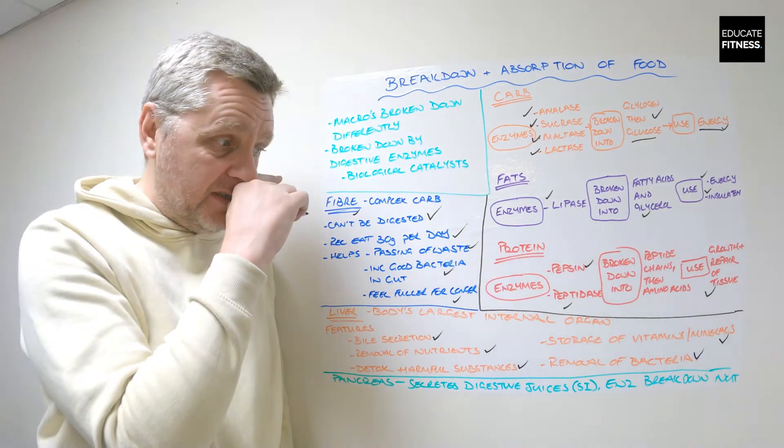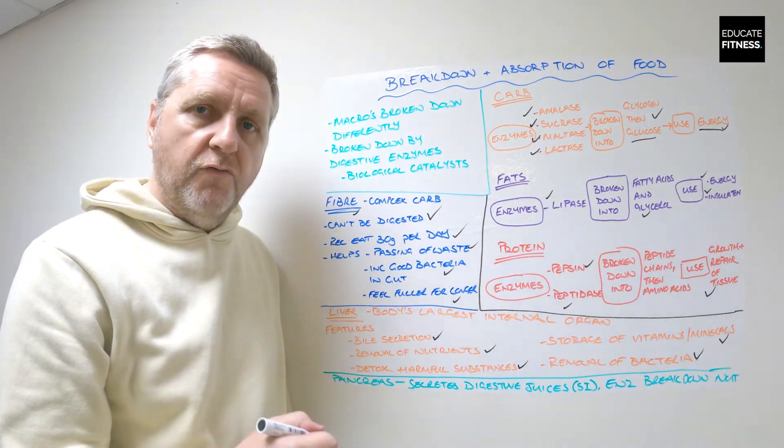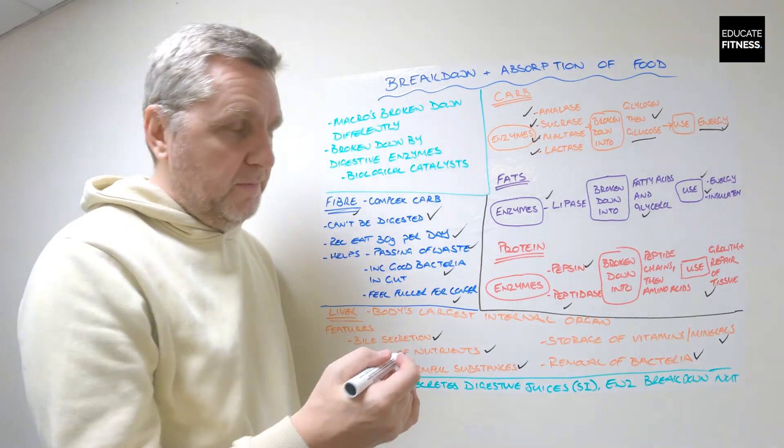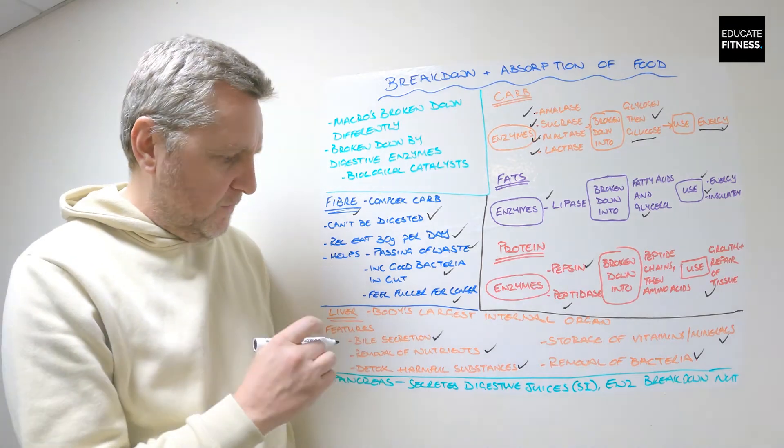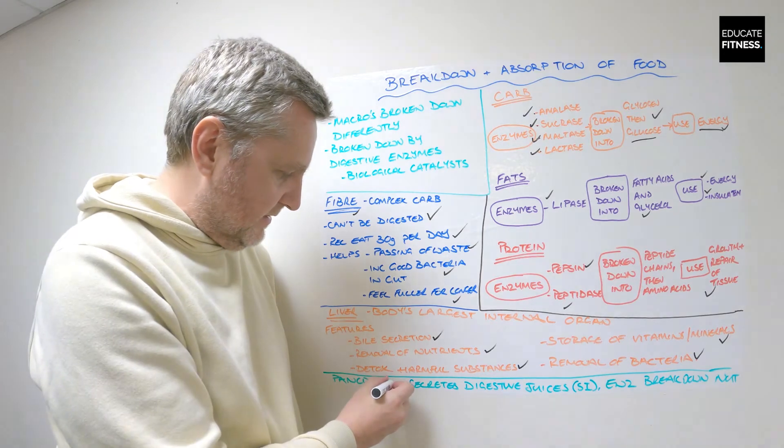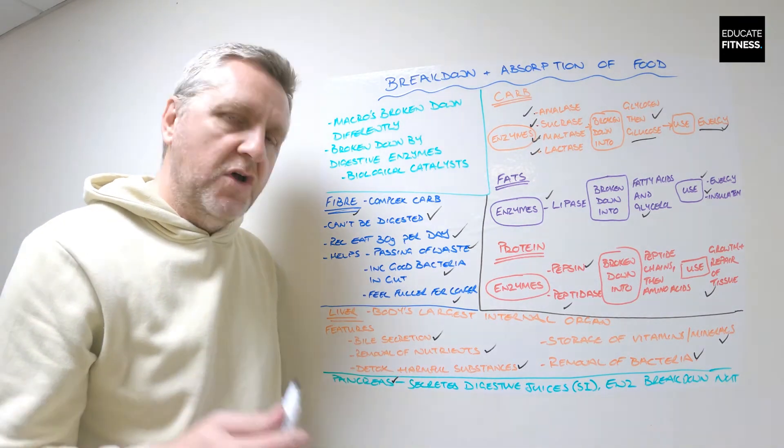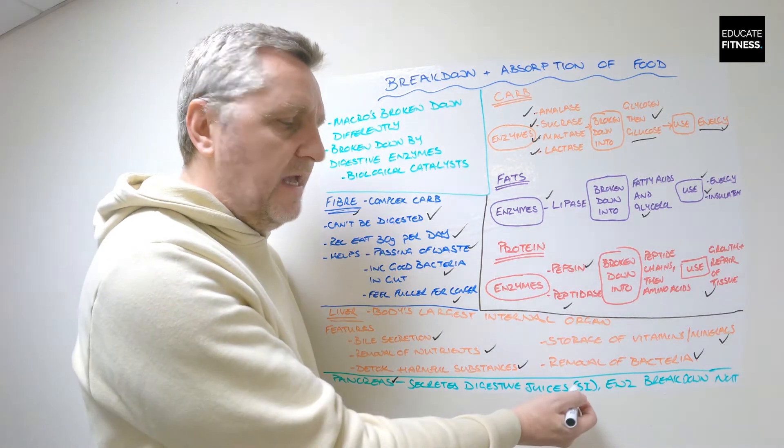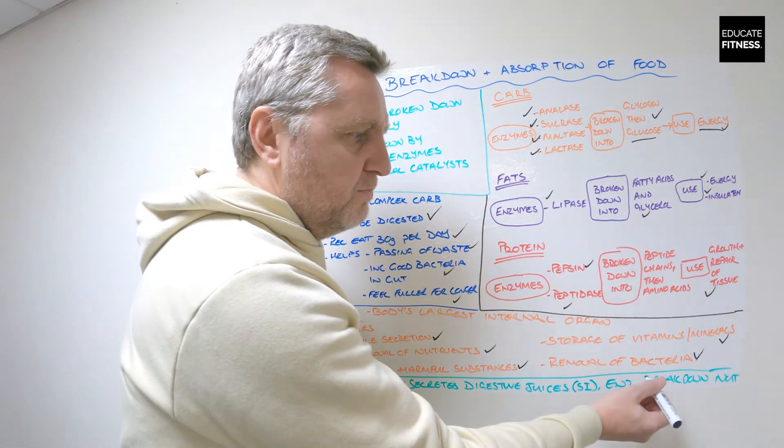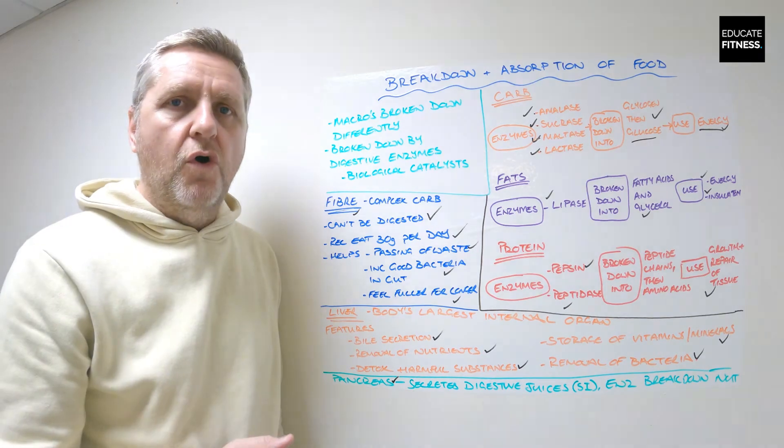Now it might look like this was a bit of an afterthought and it probably was—to be honest I'll hold my hands up, we forgot about it. But for level two fitness instructing we don't need to know too much about the pancreas anyway. The main points here: the pancreas secretes digestive juices into the small intestine and the enzymes break down nutrients. That's it, that's all you need to know when it comes to the breakdown and absorption of food.